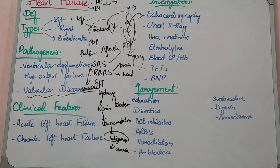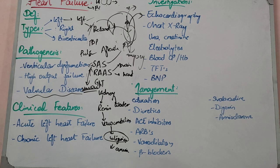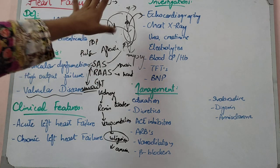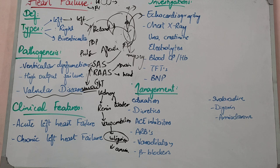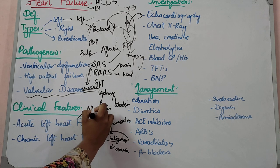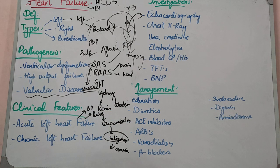Now let's look at clinical features. We discuss acute and chronic left heart failure. In acute left heart failure, pulmonary edema causes severe breathlessness and orthopnea. The patient cannot lie flat because redistributed fluid increases pulmonary congestion. There may be a cough. Blood pressure may be elevated due to sympathetic activation, but if the patient presents late in cardiogenic shock, pulse and BP will decrease.